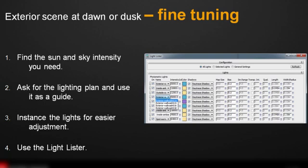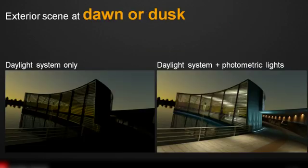Ask for a lighting plan — it's always a good idea to use it as a guide. Use instances for your lights; it's easier to adjust a row of lights that all share the same properties when they are all instanced. Use the light lister to help with that. Creating an exterior scene at dawn or dusk is always a little bit of trial and error — you're always trying to balance the daylight system with the artificial lights, and mainly trying to balance the render time. Try to limit the amount of lights as much as you can, and be creative and think outside the box.